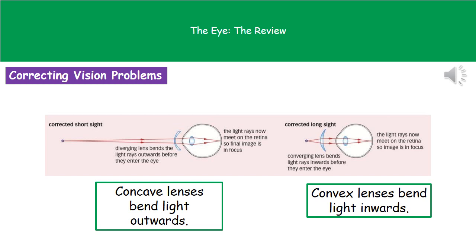We can correct our vision using lenses — whether contact lenses or glasses. To correct short-sight we use a concave or diverging lens, which bends rays of light outwards before they enter the eye, ensuring they focus on the retina rather than in front of it. To correct long-sight we use a convex or converging lens, which bends the rays of light inwards before they enter the eye, so the light rays meet on the retina again and produce a clear image.